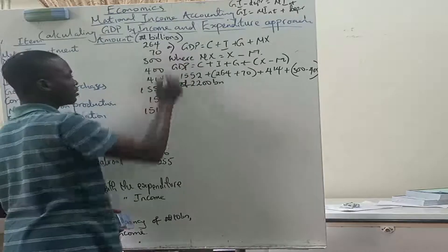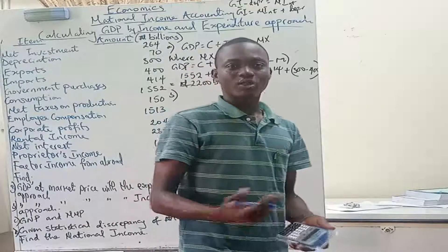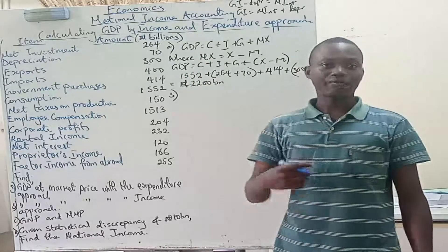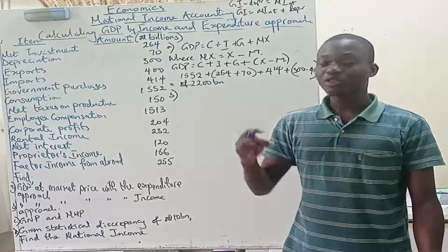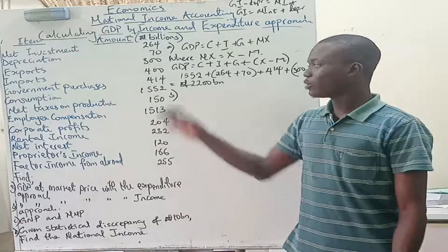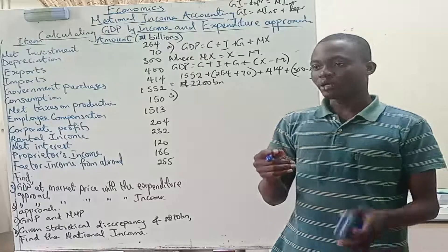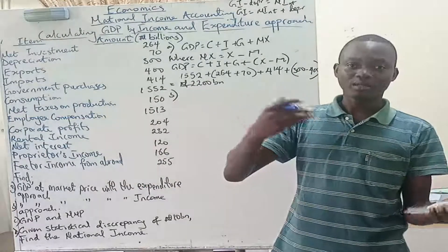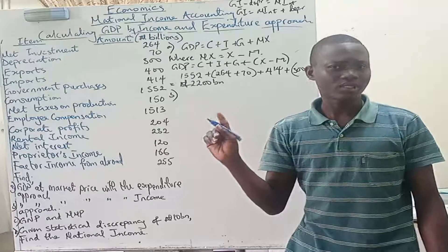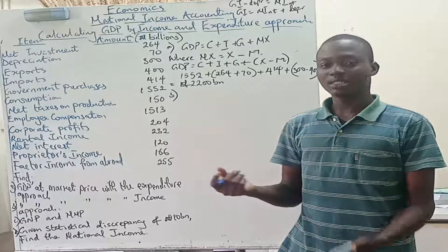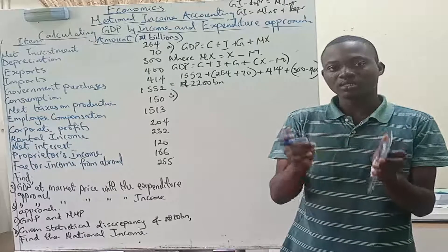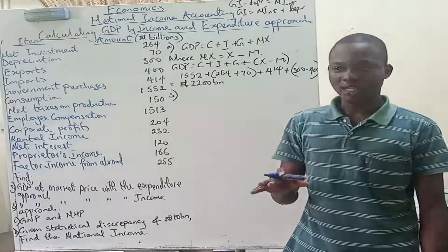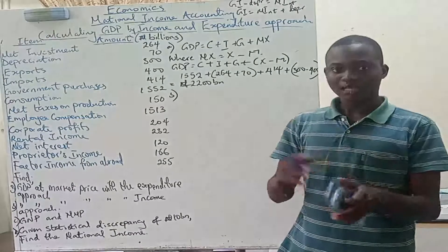For the income approach, we sum up all the incomes generated by the factors of production that a country owns — including people and what those people own, regardless of which country they are in. However, this gives us national income, not directly GDP. A Nigerian citizen working in the US contributes to Nigeria's national income, but what that person produces is in the US, not Nigeria. Gross domestic product refers to final goods and services produced within a country in a particular period, so national income and GDP are distinct — we need to convert between them.